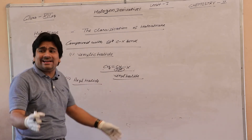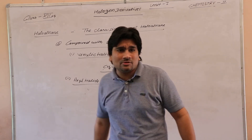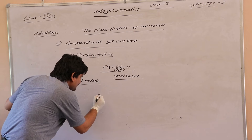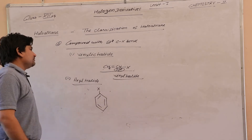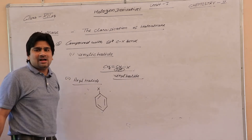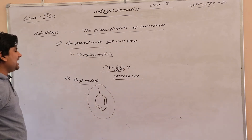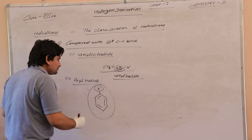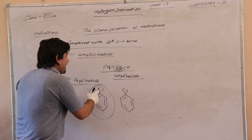The second type of compound with SP2 C-X bond is aryl halide. What is aryl halide? The halogen atom is directly attached with the aromatic ring. For example, the halogen atom directly attached with the aromatic ring — the compound is called aryl halide, such as chlorobenzene.